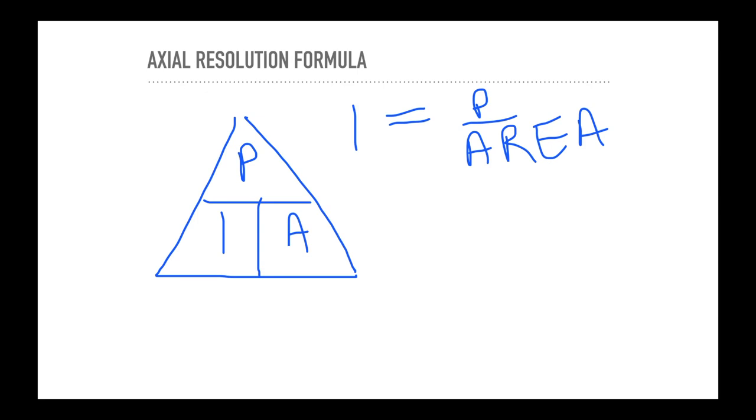If our intensity stays the same and our power increases, it has to be over a larger area. So you see how whatever's on the top will be directly related to whatever's on the bottom as long as the other variable stays the same. And the way all the questions on the exam are, they will only change one of the values. One will always stay the same. So let's look at why the axial resolution works the way it does.